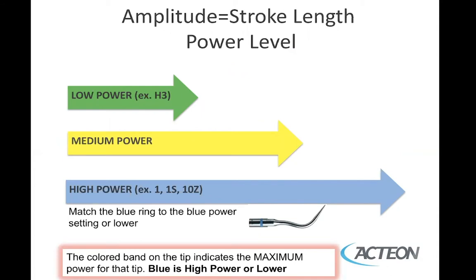The amplitude tells you the stroke length, which is determined by how you set the power level. With the Neutron system, low power is green — for example, the H3 tip in your kit is used on green. Each tip from Neutron has a color-coded ring so there's no guesswork about the power level. Medium power is yellow, and high power tips — the number one, the number one S, and the 10Z — have blue rings. You can always turn the power down lower but never higher than the tip's designated color.